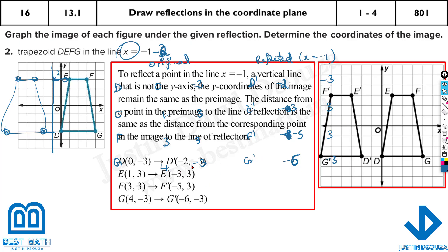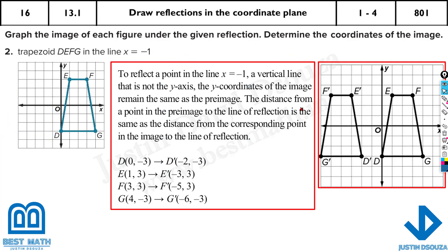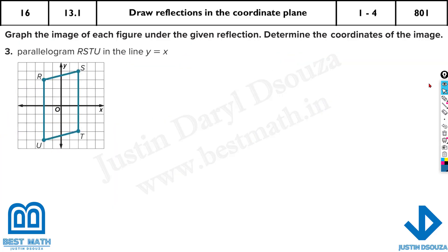The y values will remain the same because it's along x is equal to minus 1. The y values for all reflected points stay the same — minus 3, 3, 3, and minus 3. All these y values are unchanged.